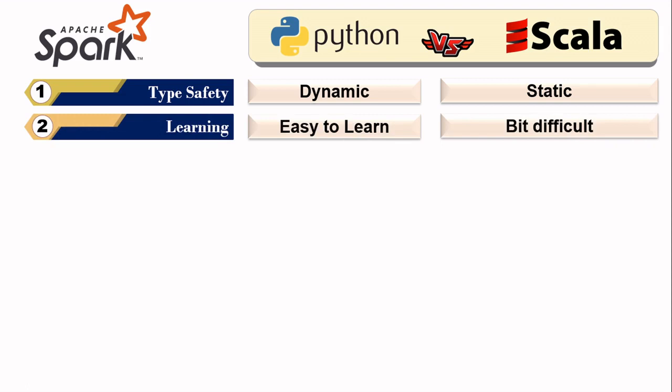In terms of learning, Python is very easy to learn, fast to develop code, and easy to debug. Scala is a bit more difficult and tough to debug existing code. Also, Scala source code is developed on top of Java, so you may need to learn Java additionally in the future to use Java APIs and libraries.